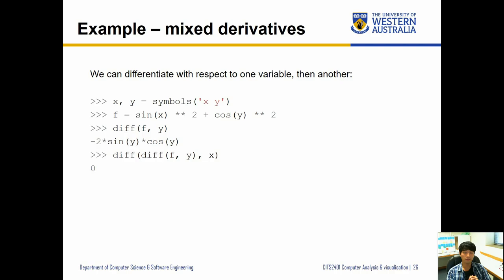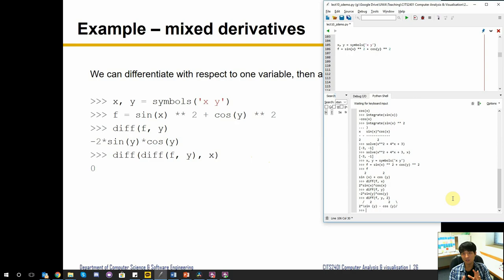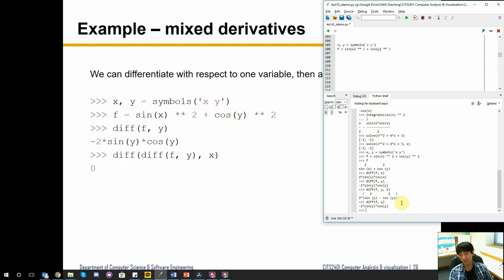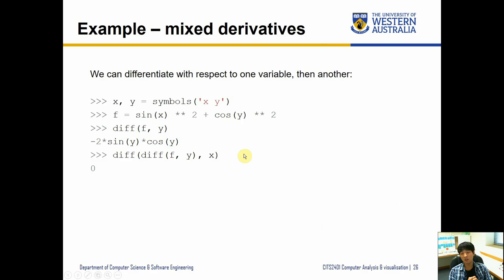Now for mixed derivatives. We can differentiate with respect to one variable and then differentiate with another by nesting differentiation function calls. We have the same equation: diff(f, y) is 2·sin(y)·cos(y), and then we try to differentiate that with respect to x. Since there's no x variable in that result, it just gives us zero. You can solve equations in many different ways this way.